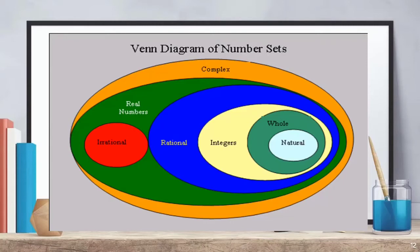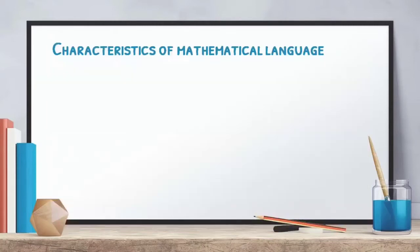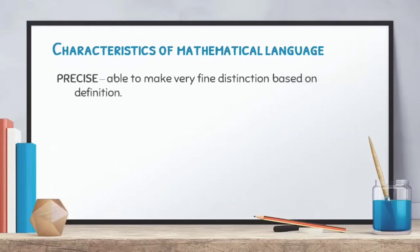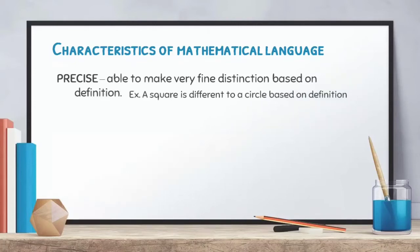Now let's go to the characteristics of mathematical language. First, it is precise — we are able to make very fine distinctions based on definition. For example, a square is different from a circle based on definition. A square is a shape with four equal sides, while a circle is a shape with no sides at all. By means of definition we can be precise about what we are talking about in mathematics.